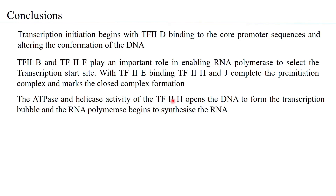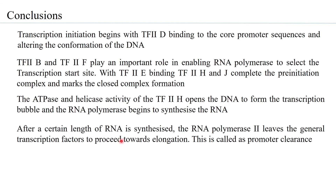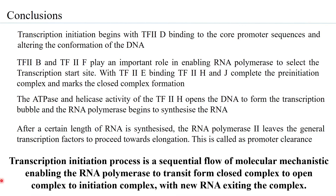The ATPase and helicase activity of TF2H ensures that the DNA is opened to form the transcription bubble — the open complex — and then begins synthesis of the RNA. After a certain length of RNA is synthesized, RNA polymerase II leaves the general transcription factors to proceed towards elongation — what is called promoter clearance. Transcription initiation is therefore a sequential flow of molecular mechanisms enabling RNA polymerase II to transit from the closed complex to the open complex, to the initiation complex, with new RNA exiting the complex.